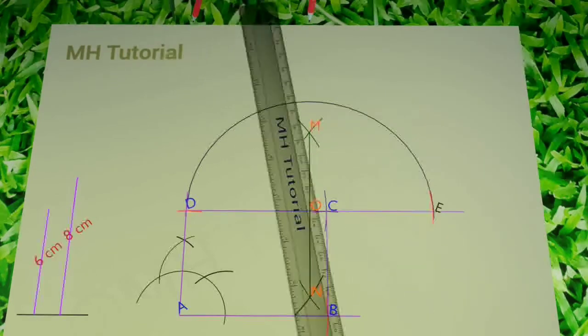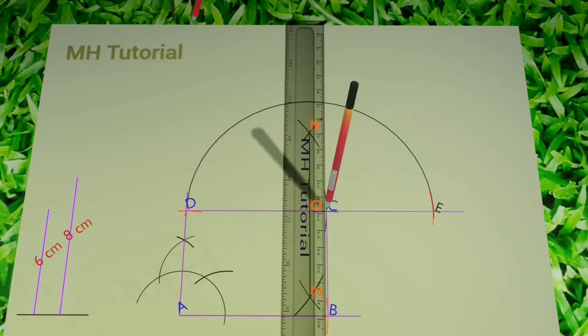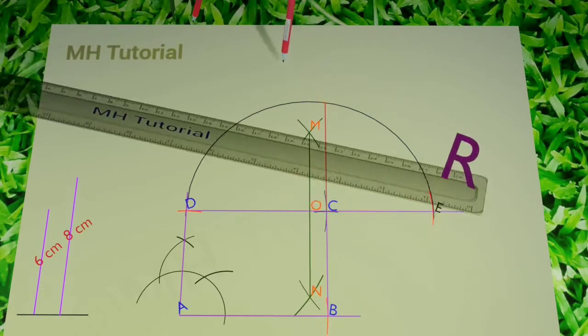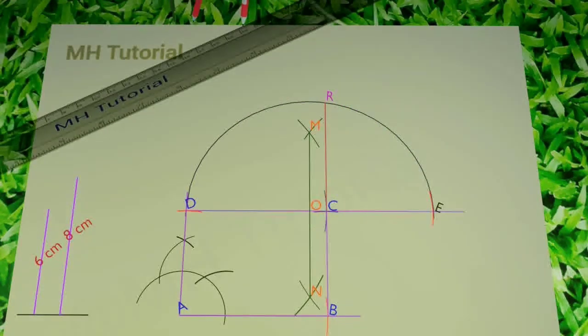Now the arm DC of the rectangle needs to be slightly extended so that it intersects that semicircle. This point of intersection is R. Thus, the length of the required square will be CR.